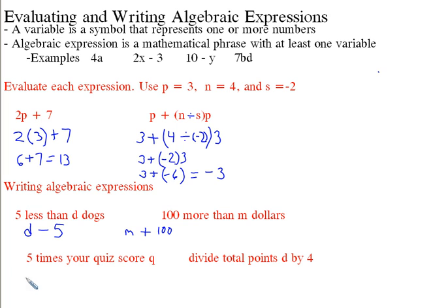You don't know what the m is, you don't know what the d is. You just know that that's something you're probably going to be asked to figure out. 5 times your quiz score or q, so it's just going to be 5q or 5 times q. That's the same thing. And divide the total points d by 4, that's just going to be d divided by 4.